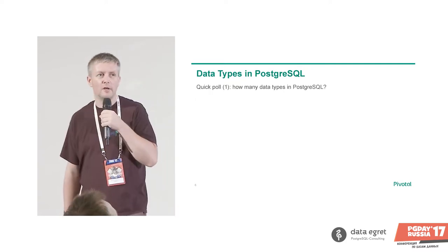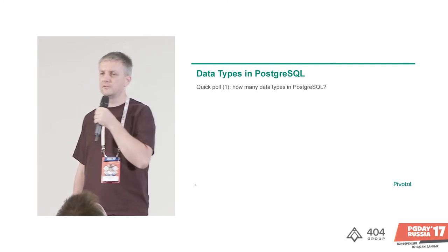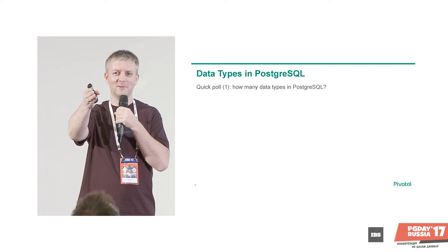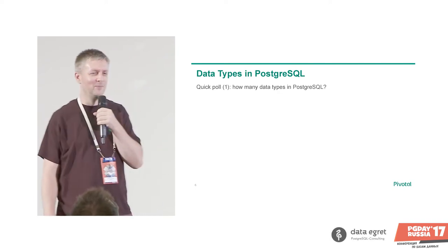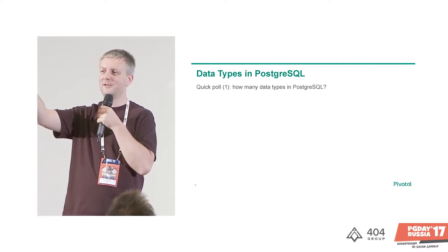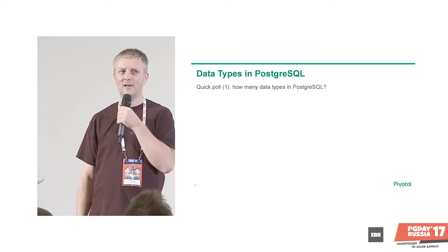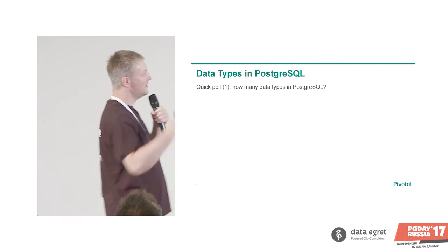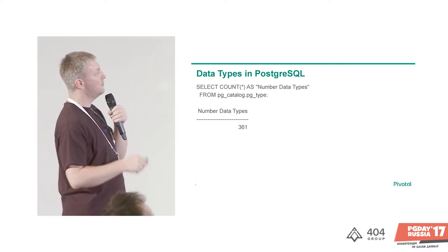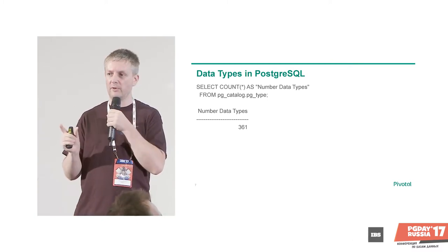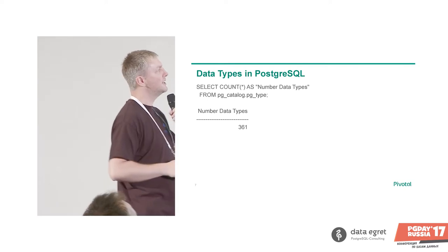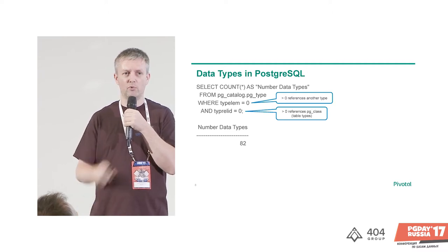First question: how many data types do we have in Postgres? It's called pg_type. If you look into pg_type, in my database it says 361. However, it also includes a row for every table you have, because every time you create a table in Postgres it also creates a row type which has the exact structure of that table. So we have to exclude all of these — we still end up with 82 data types in Postgres, more than any of you guessed.